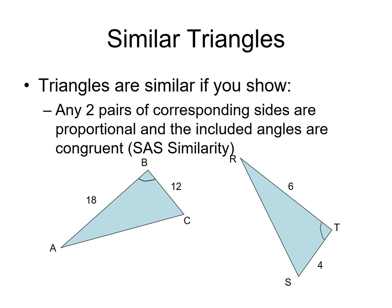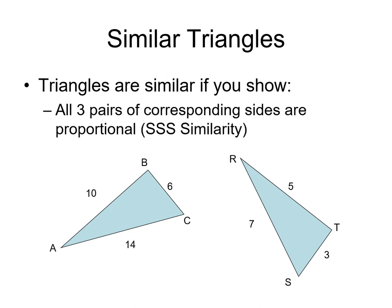So this is the first similarity statement, SAS similarity. The second one is that all three pairs of corresponding sides are proportional, SSS similarity, side, side, side are proportional.